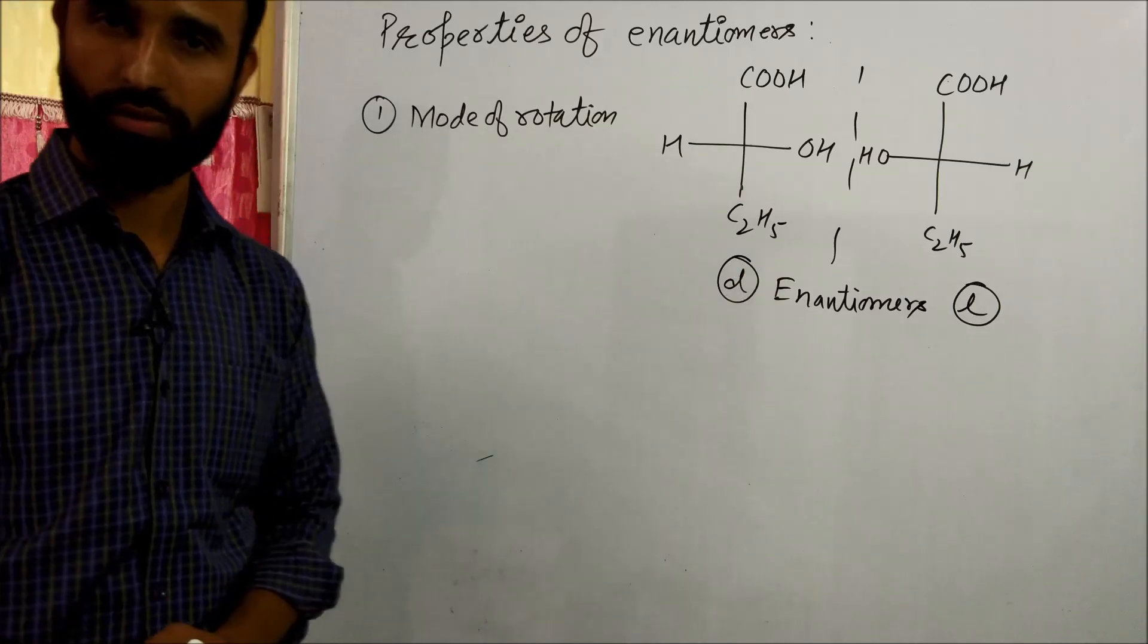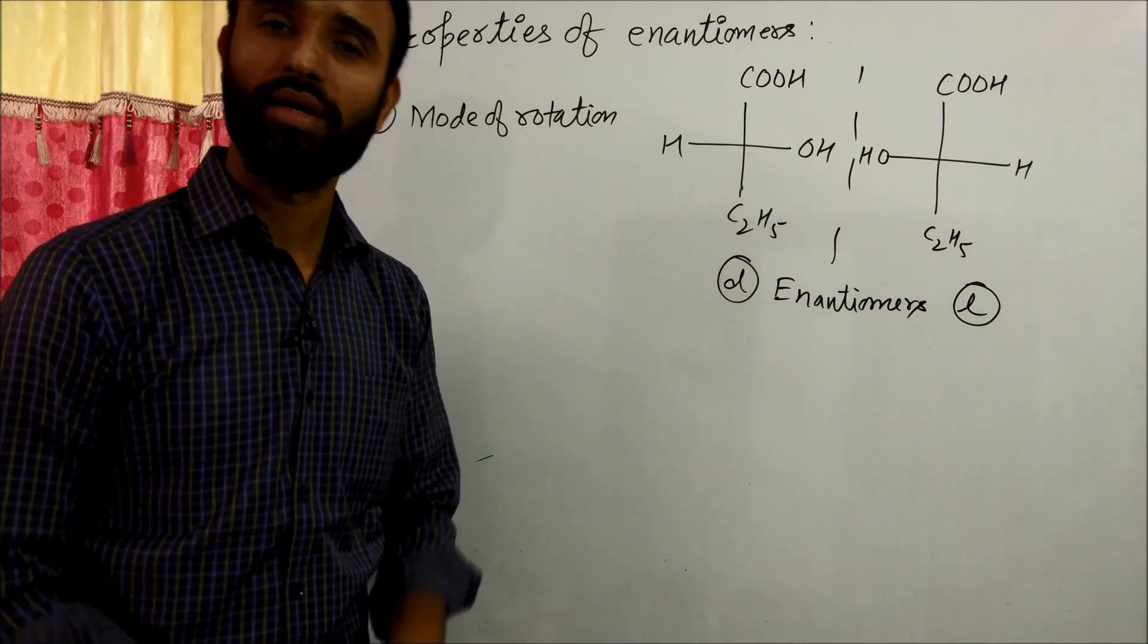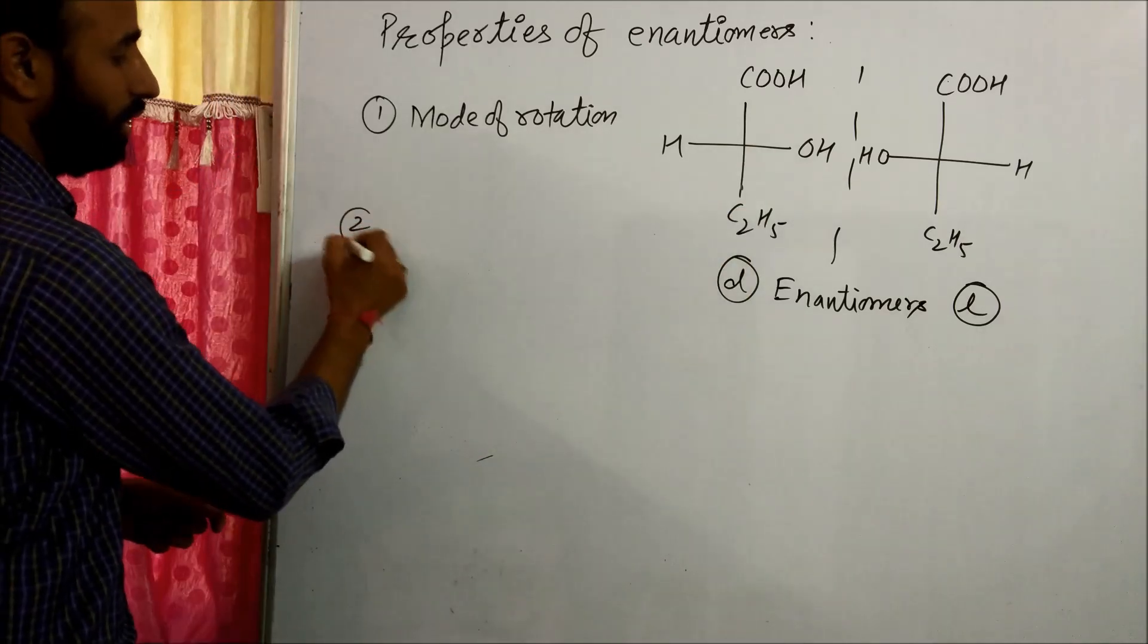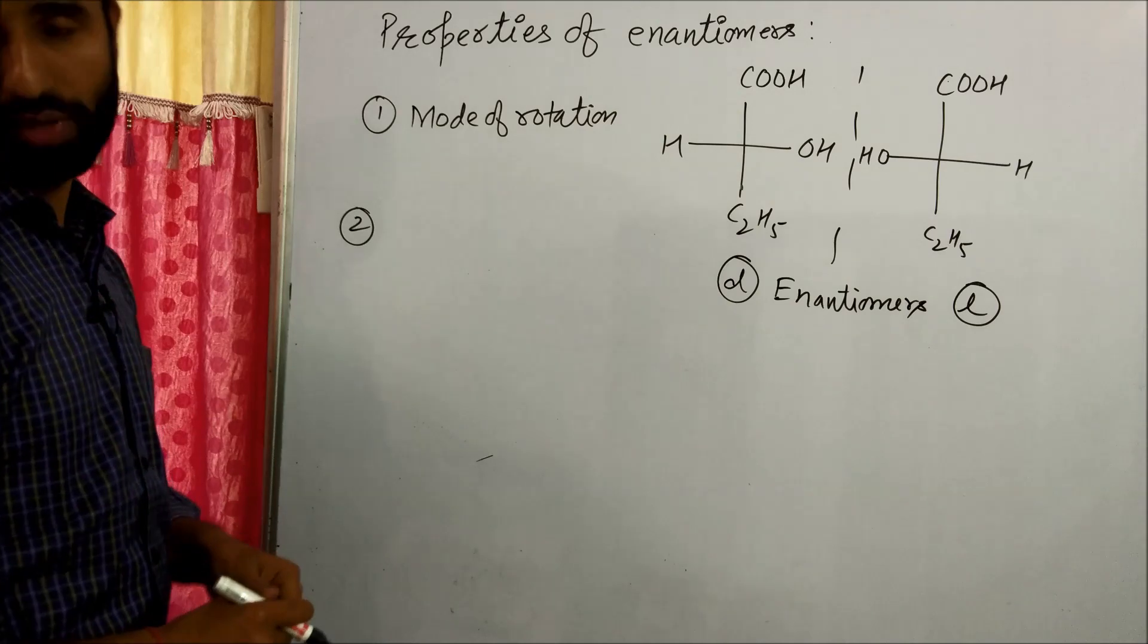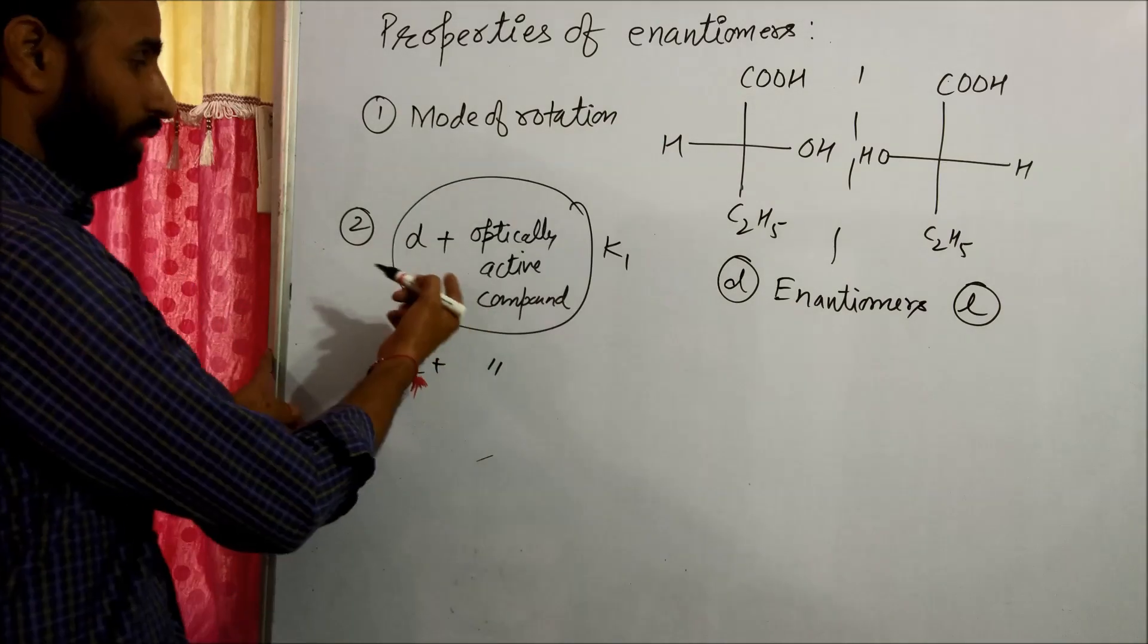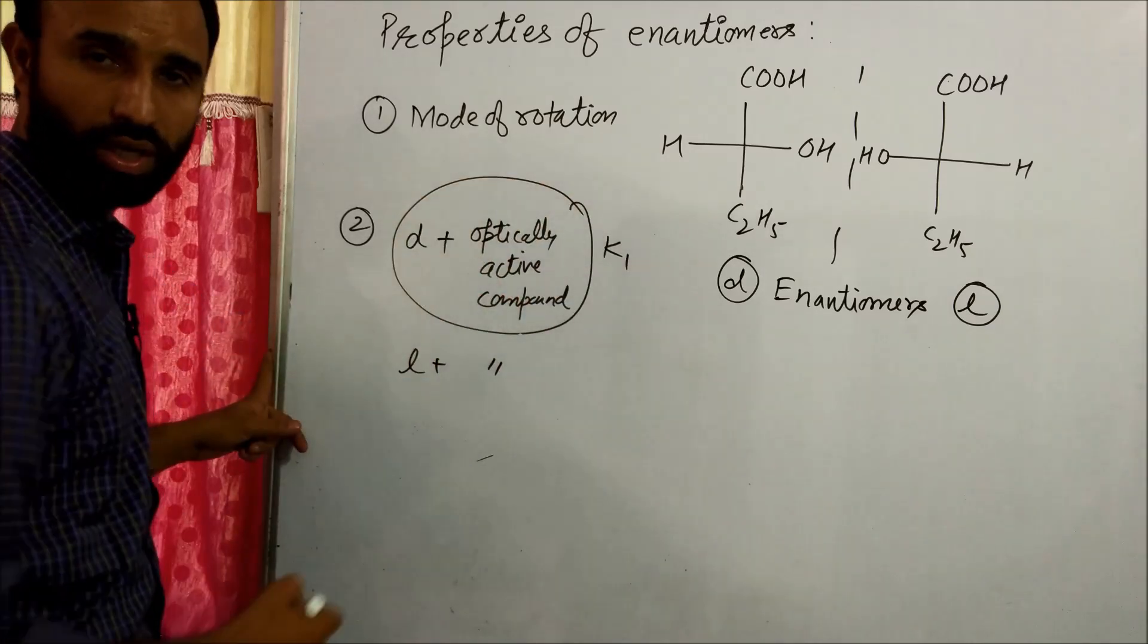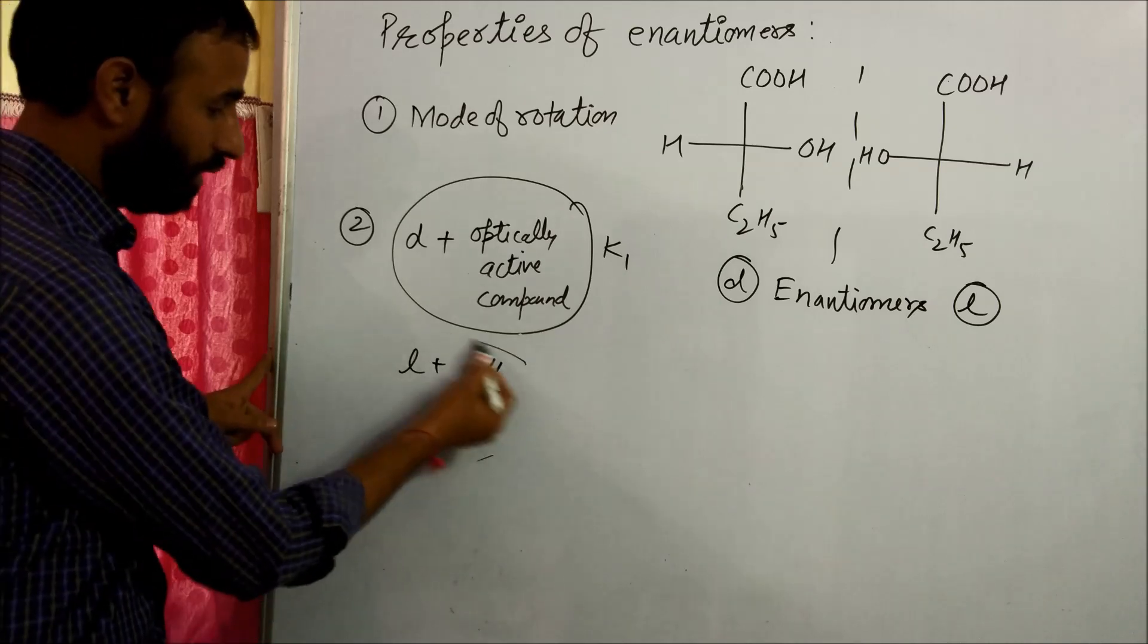They are equal in magnitude but opposite in direction. And second is rate of reaction or rate constant when D+ optically active compound they react and the rate constant let us take k1, and L form react with again optically active compound, its rate is k2.